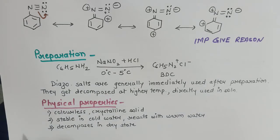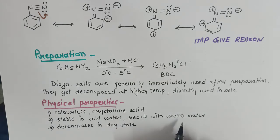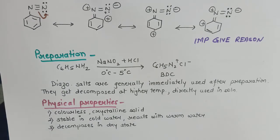The physical properties: diazonium salt is a colourless crystalline solid. It is stable in cold water, but if brought into contact with warm water it will react. It also decomposes in the dry state. With all this basic knowledge, we will proceed to the chemical reactions of diazonium salts.